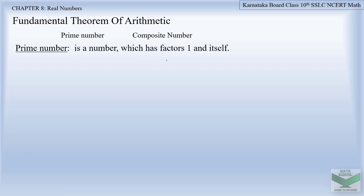A prime number is a number which has factors 1 and itself. Any number which has factors 1 and itself is considered as a prime number. For example, if you take number 2, it is divisible by 1 and by itself. Any number which is divisible by 1 and itself is termed as a prime number.